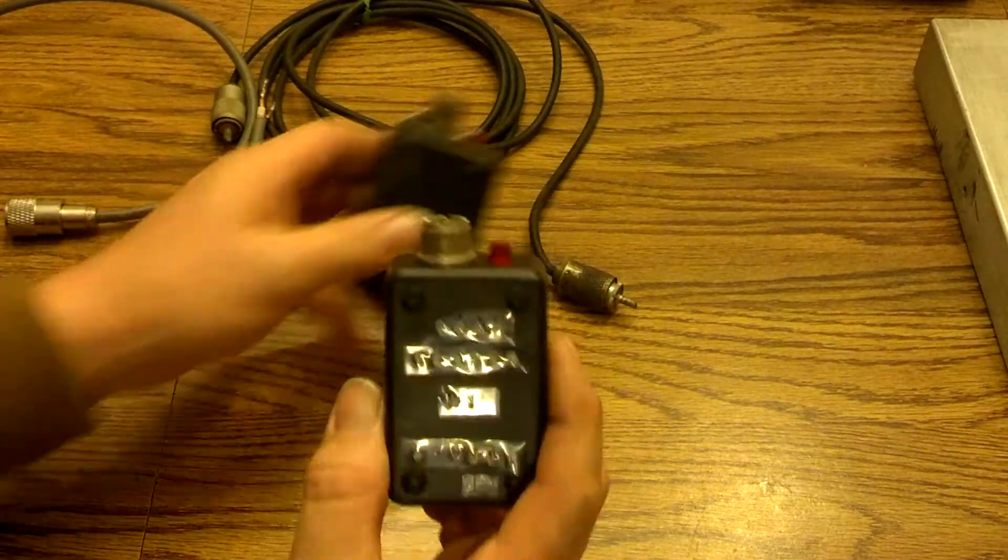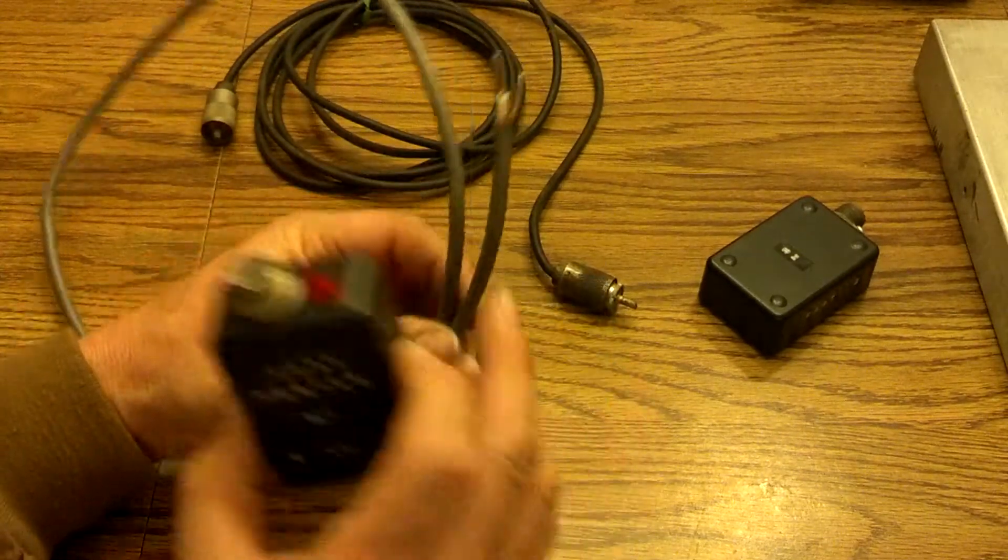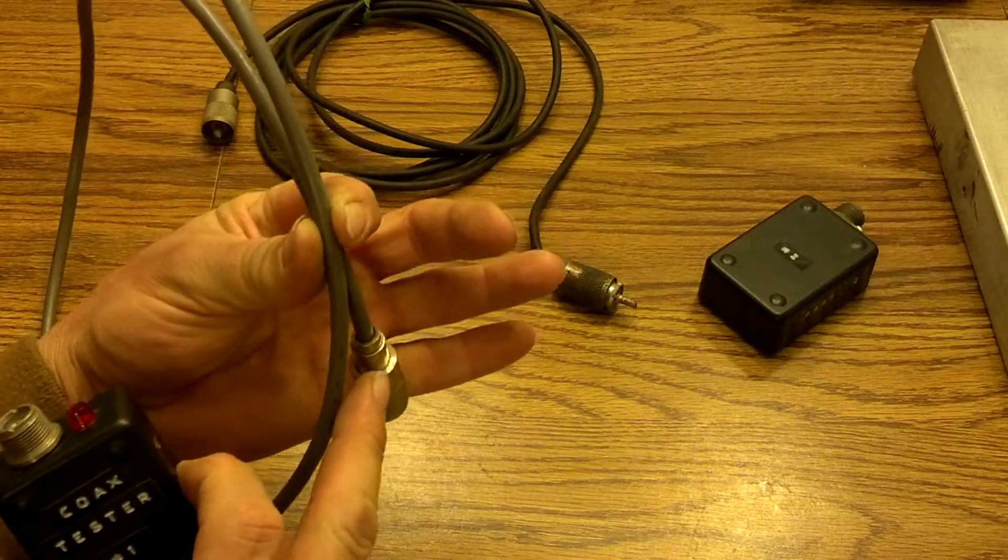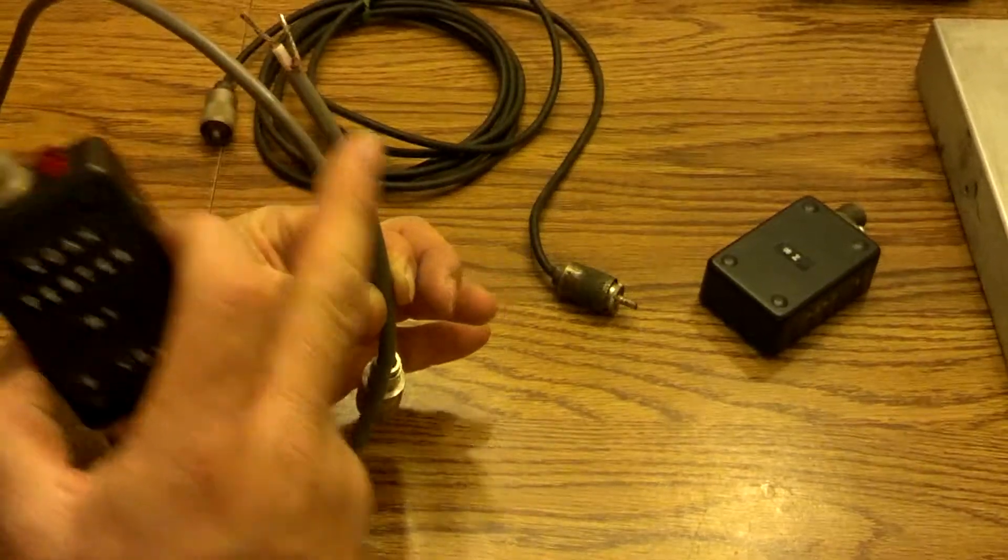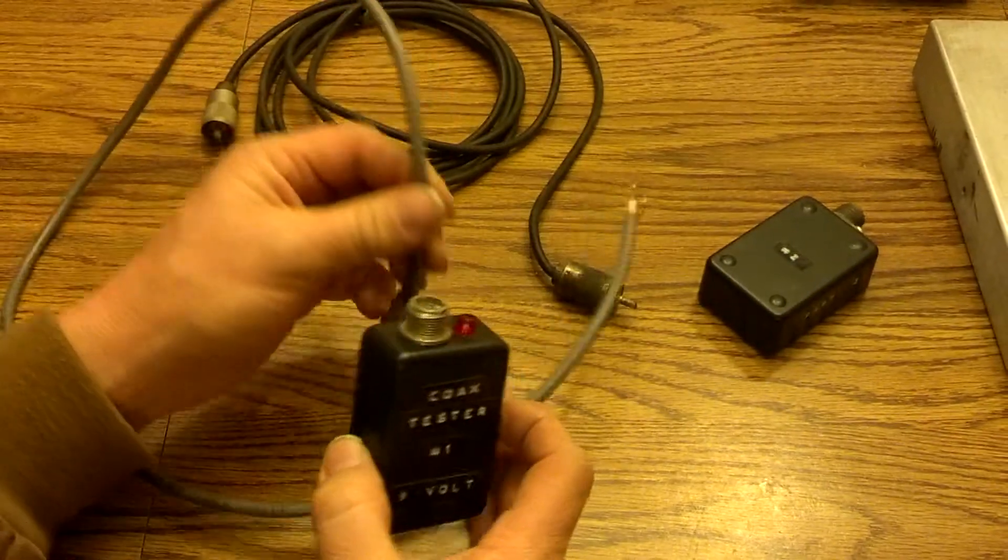But let me show you something about this first one, the one with the power on it. So for example, if you had a coax cable that had a bad end on it, a dead short one I'm talking about, dead short, let me show you what it would do.